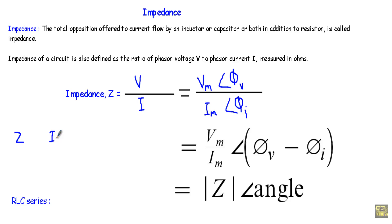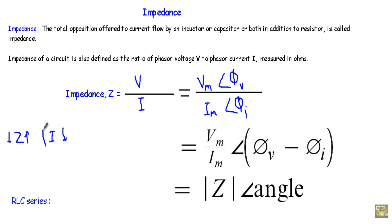Impedance implies the opposition to current flow in a circuit. We express impedance with Z. If we increase the amount of opposition, there will be a decrease in current. If we decrease the amount of opposition, it will increase the current flow in that circuit.